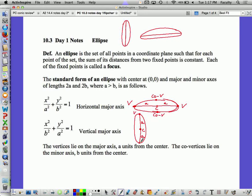The vertices. You have vertices and you have co-vertices. Vertices are on the major axis. The co-vertices are on the minor axis. The vertices lie on the major axis, a units from the center. The co-vertices lie on the minor axis, b units from the center.